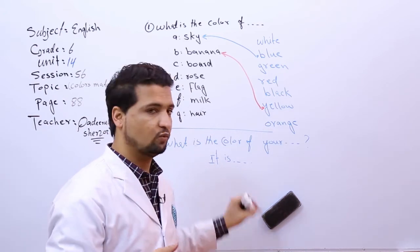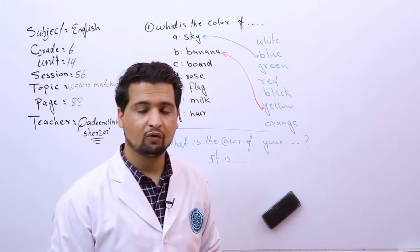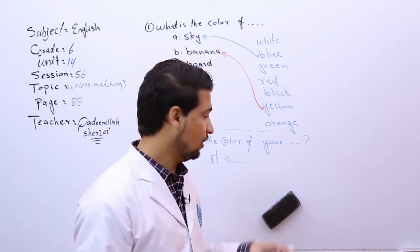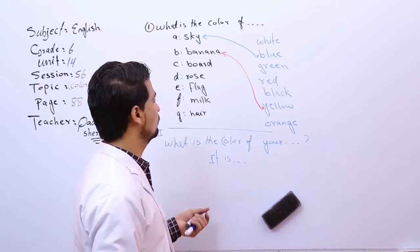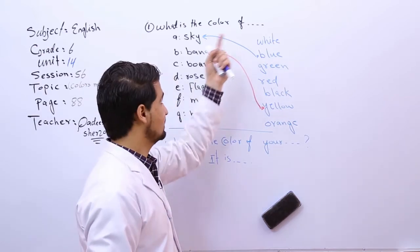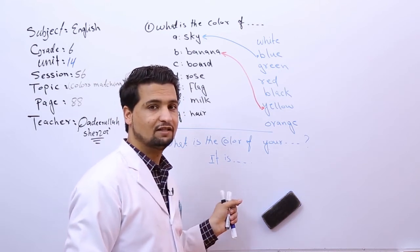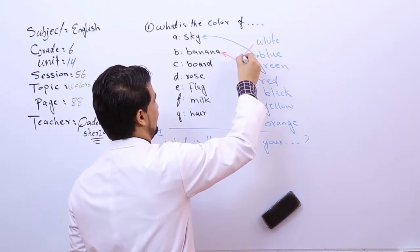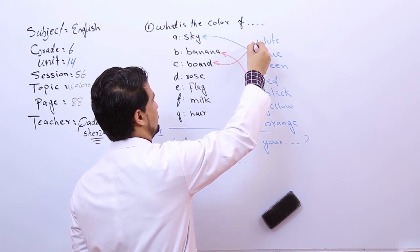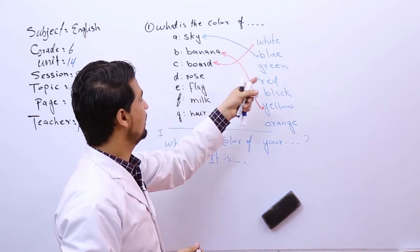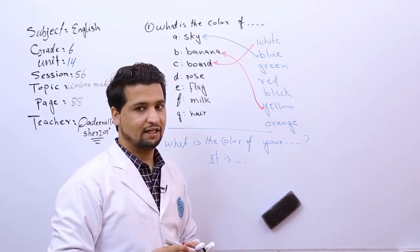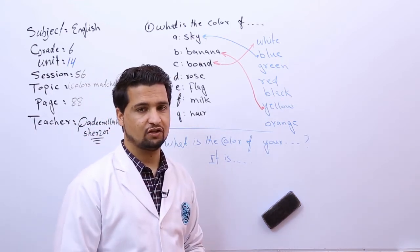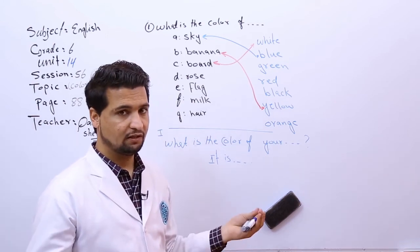What is the color of this board? Red? Very good, right? No, white. So we have to draw the line. It is white. What is the color of board? It is white, it is black, it is green. Clearly students, very good.